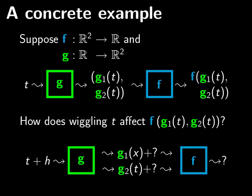How does wiggling the input affect the output? The thing that's confusing here is that wiggling the input of g affects both of the outputs of g, which will affect both of the inputs of f, which will then affect the single output of f. So to understand this sort of thing, we can apply the chain rule.